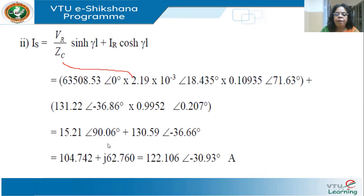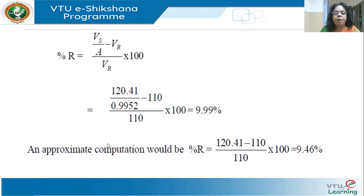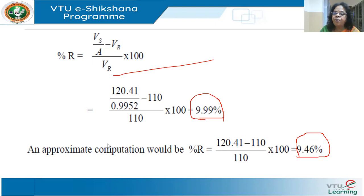Percentage voltage regulation: for long lines use (|VS/A| - |VR|)/|VR| × 100, giving 9.99%. The approximate formula (|VS| - |VR|)/|VR| × 100 gives 9.46%. The rigorous formula uses VS/A as the no-load receiving end voltage, which is more accurate for long lines since the difference can be substantial.